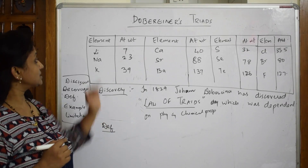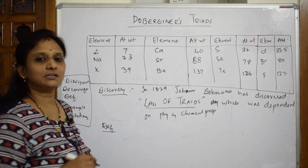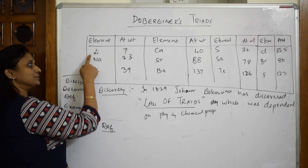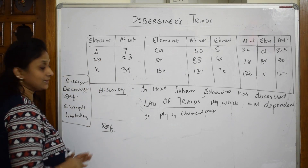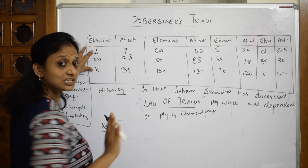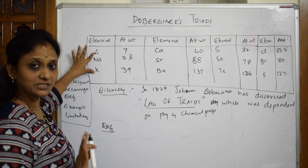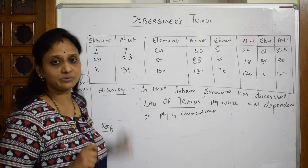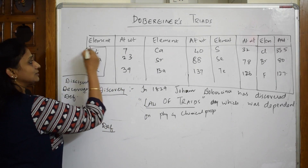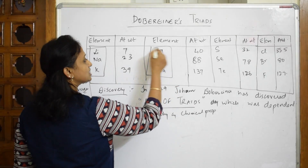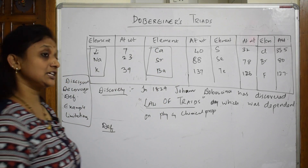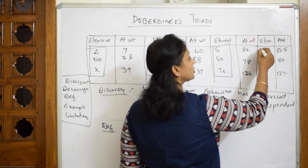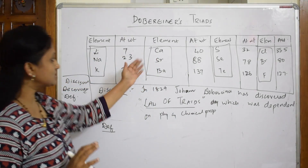What Dobereiner did is he picked up sets of three elements — that's why it's called triads, meaning three. For example, one set was calcium, strontium, and barium. Another set was sulfur, selenium, and tellurium. And one more set was chlorine, bromine, and fluorine.